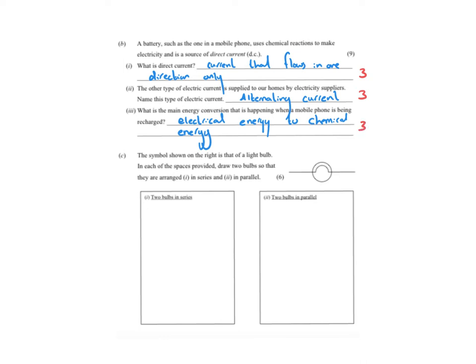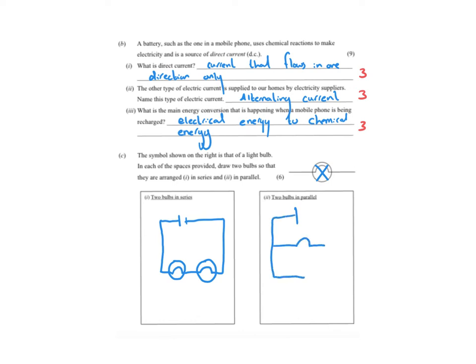The next part of the exam question asks us to draw two bulbs arranged in series and in parallel. For the series circuit we draw the battery, wire, and place one bulb after another in a single loop. For the parallel circuit we draw two possible routes for the current to flow — the current reaches a junction and can travel through either lamp one or lamp two.